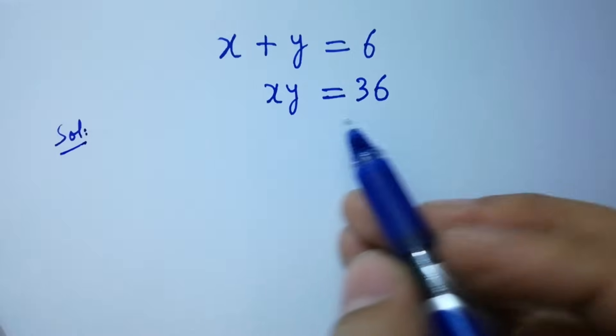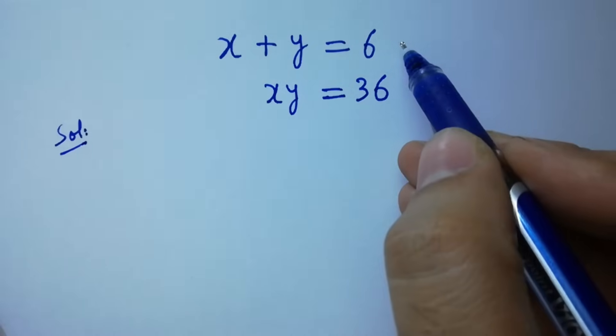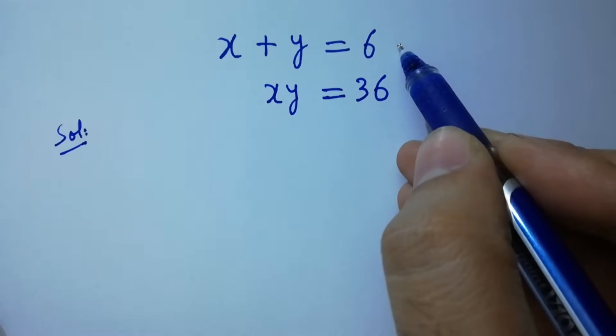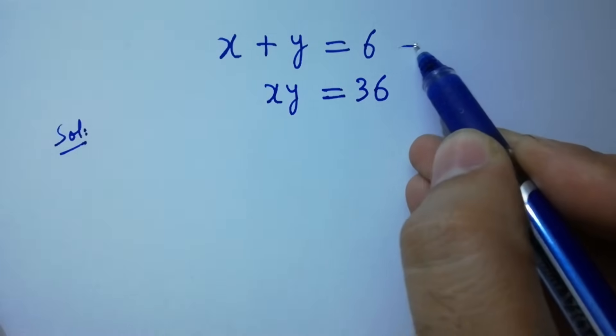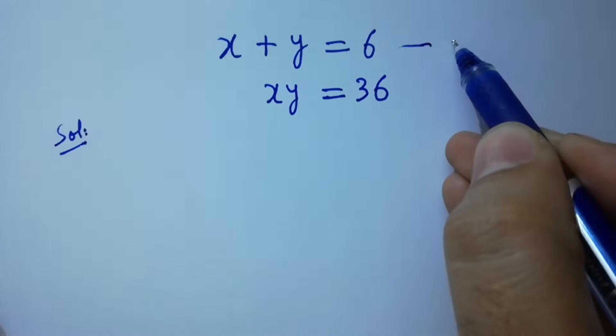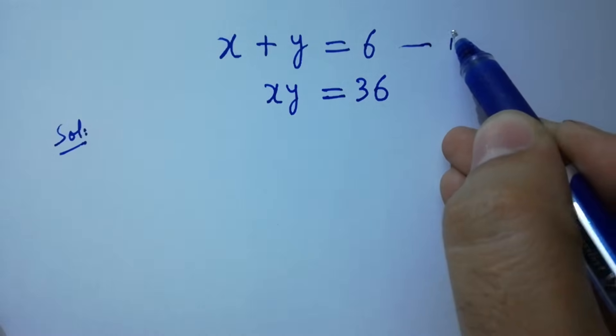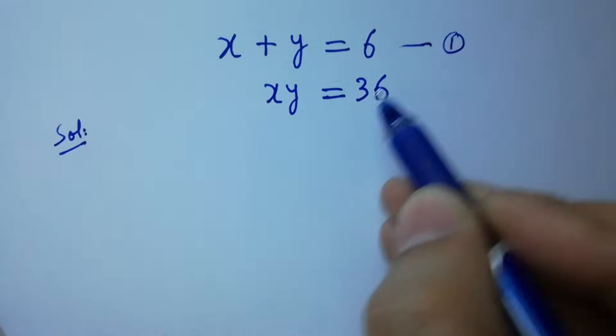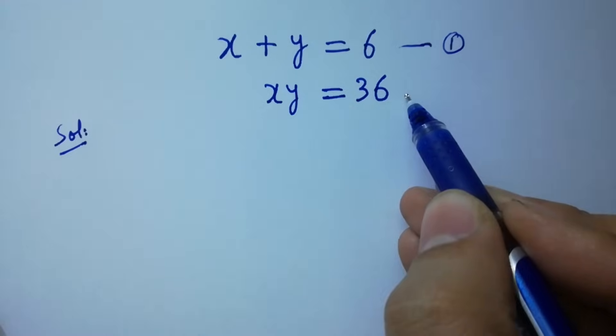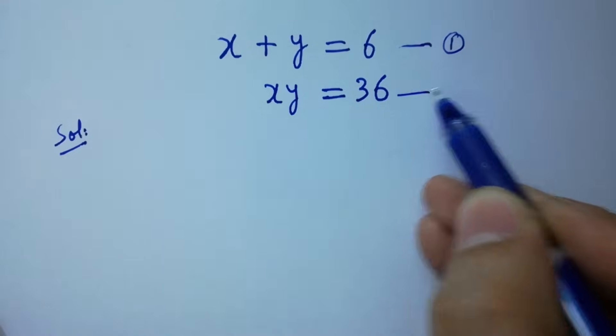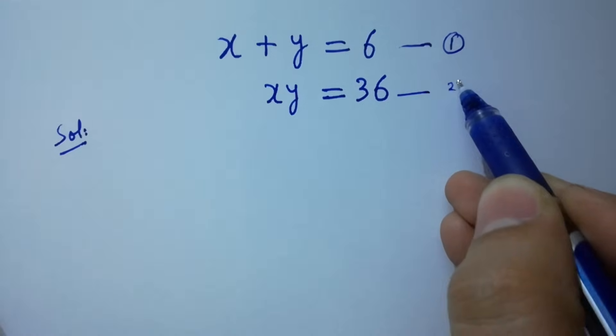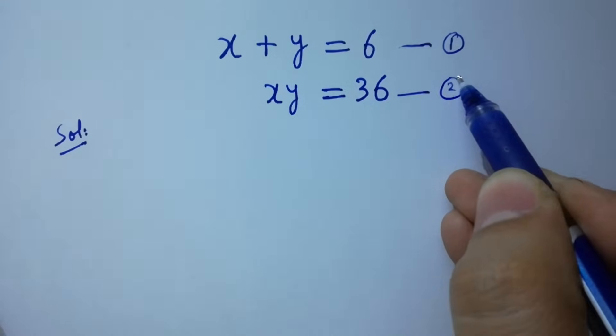To solve this, let x plus y equal to 6 be the first equation, and x times y equal to 36 be the second equation.